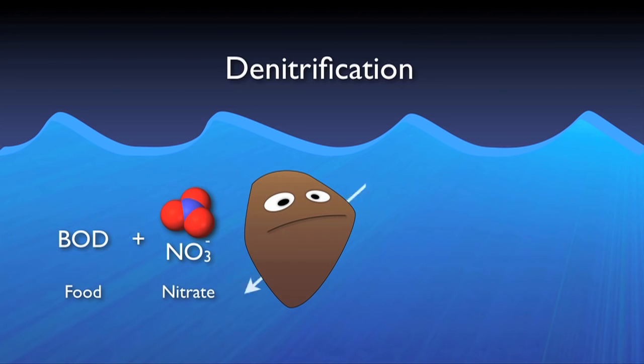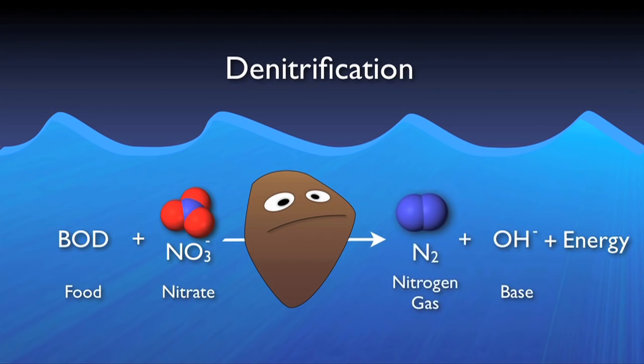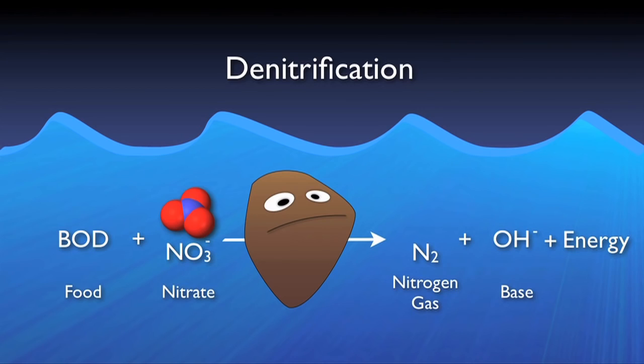These bugs take the BOD and nitrate to produce energy, base, and nitrogen gas. The base is actually very useful in buffering the acid produced during nitrification. The nitrogen gas then floats in tiny bubbles to the surface and into the atmosphere. Though great in the biological basin, denitrification in a clarifier can result in undesirable floating sludge.